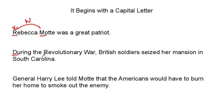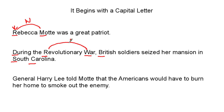Let's look at this next sentence: 'During the Revolutionary War, British soldiers seized her mansion in South Carolina.' We have several capital letters. 'During' — is that a noun? It's not; it doesn't name a person, place, thing, or idea. 'Revolutionary War' — revolutionary is an adjective, but this is the entire title, making 'Revolutionary War' a noun. 'British' is a proper adjective, so it is not considered a noun. 'Soldiers' is a noun. 'South Carolina' is the name of a state, so that is definitely a noun.